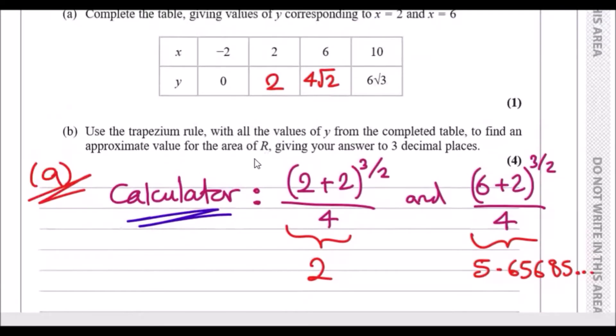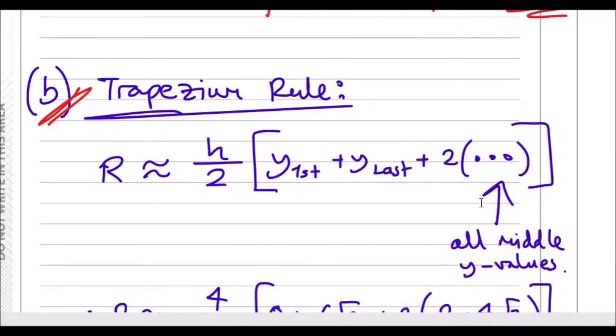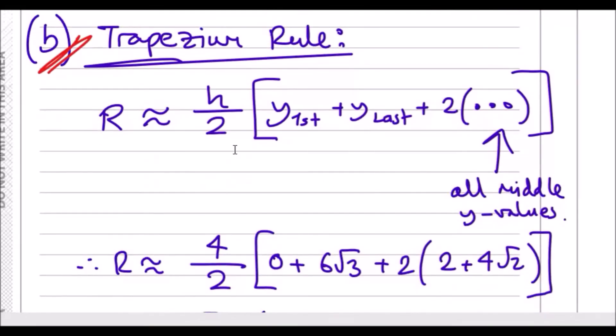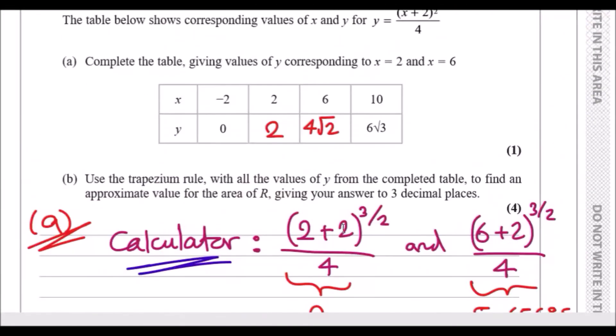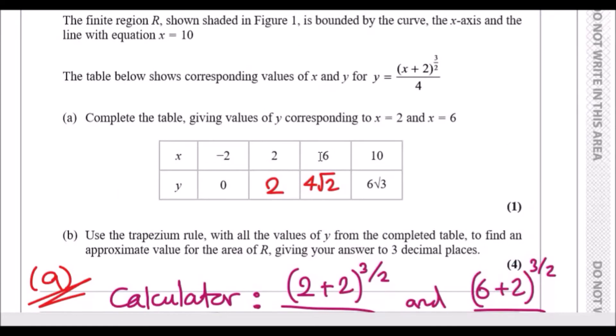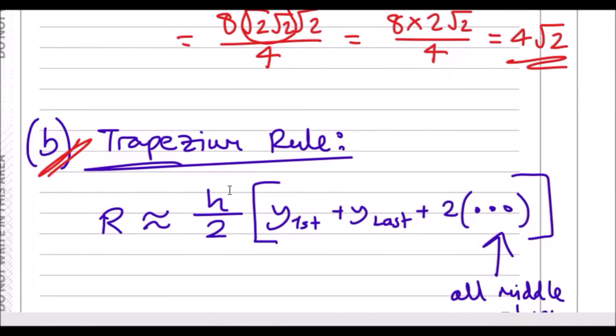Part (b): Use the trapezium rule with all the values of y from the completed table to find the approximate value for the area of R. Same procedure, and you're given the trapezium rule in the formula booklet. What I did: I always let the region be approximately equal to h/2, where h is the width. Calculate the width very easily by finding the difference between each x value. You can see it's going up in blocks of 4s, so h is 4.